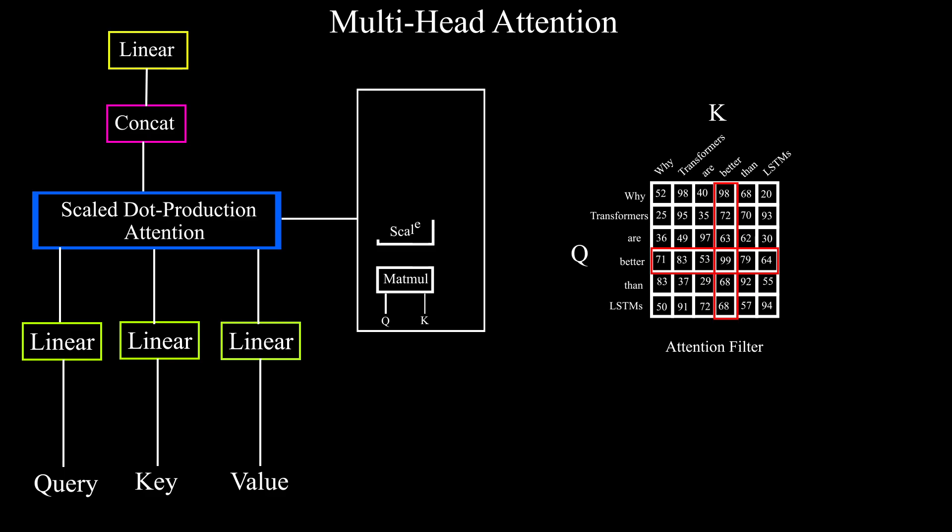Then, the author divided the values in the matrix by square root of the number of dimensions which is 6 in our case to scale the values in a certain range. Then a softmax layer is applied in order to convert these values into probabilities.